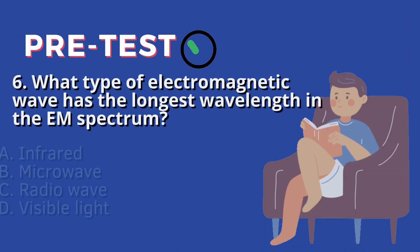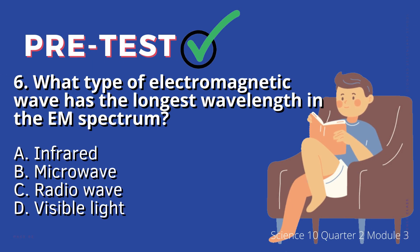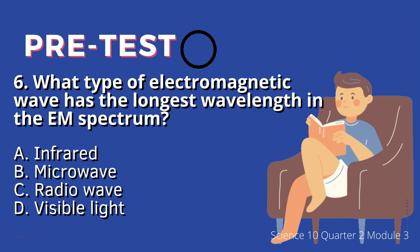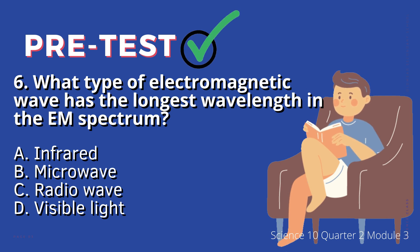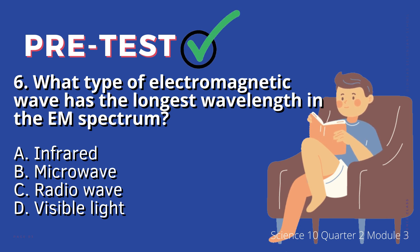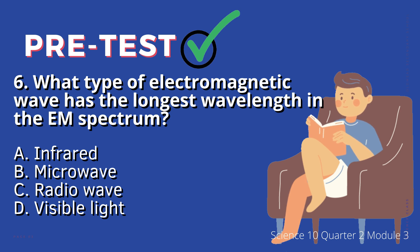6. What type of electromagnetic wave has the longest wavelength in the EM spectrum? A. Infrared, B. Microwave, C. Radio wave, D. Visible light.